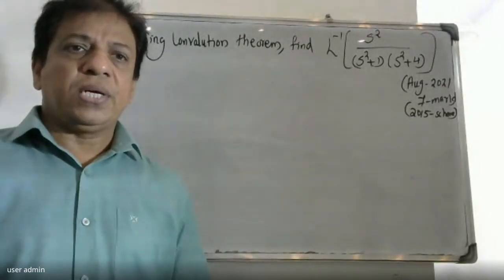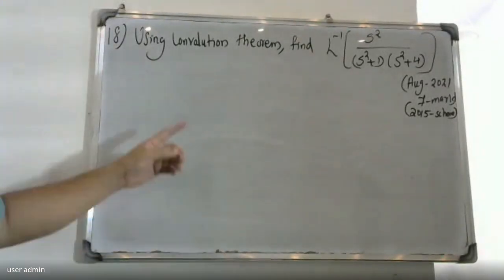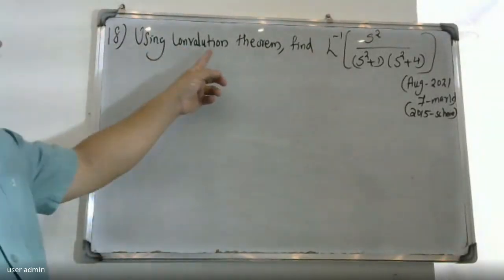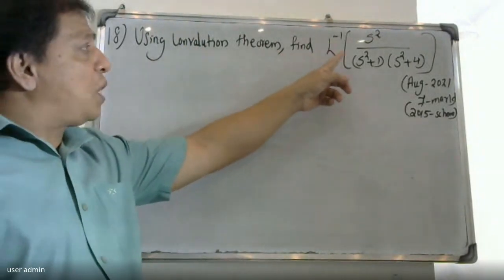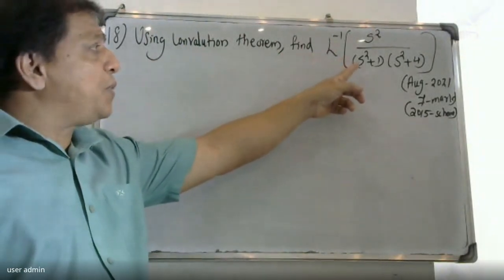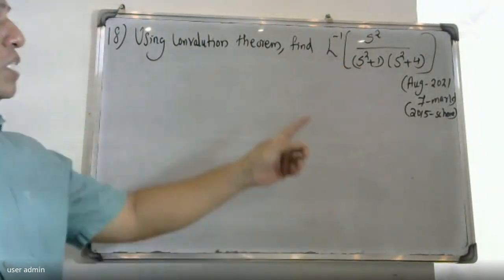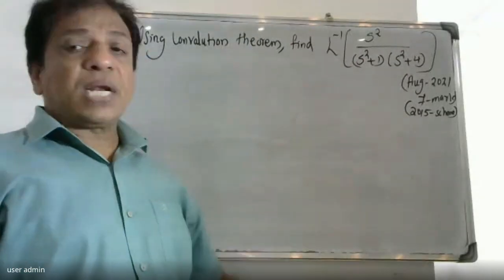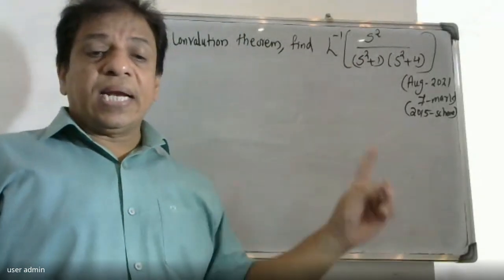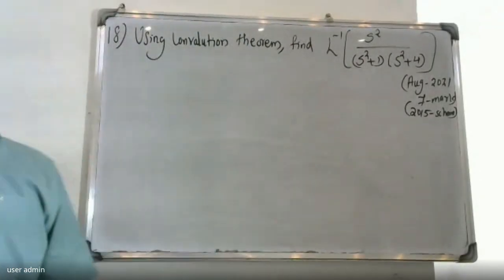Good morning students! How did the university question go? Using the convolution theorem, find the inverse Laplace of s squared by (s squared plus 1)(s squared plus 4). This is an August 2nd year, 7-mark question for 2nd year scheme students.